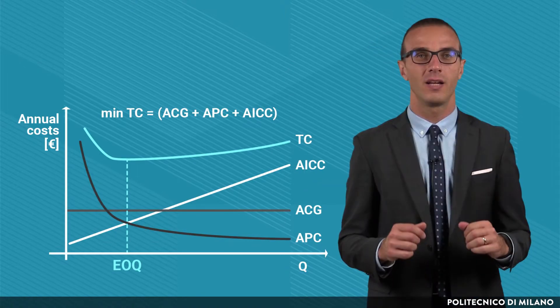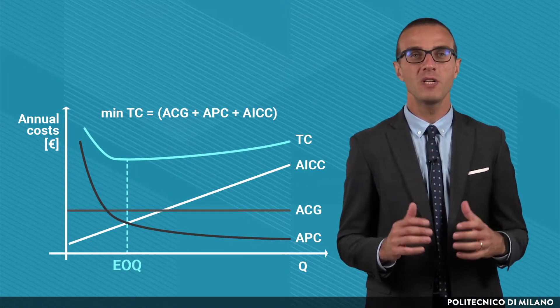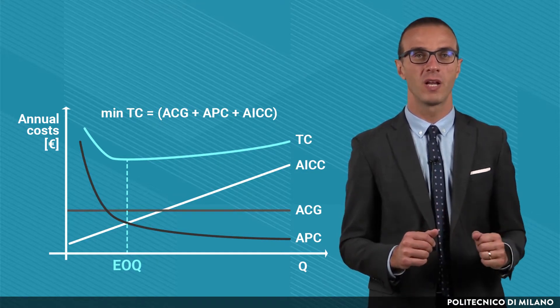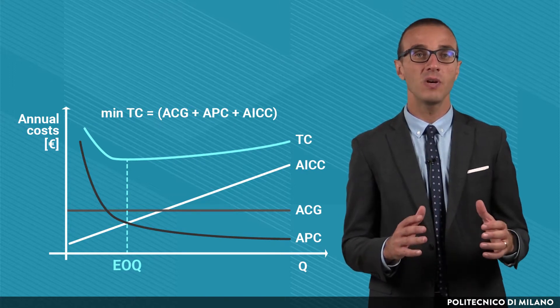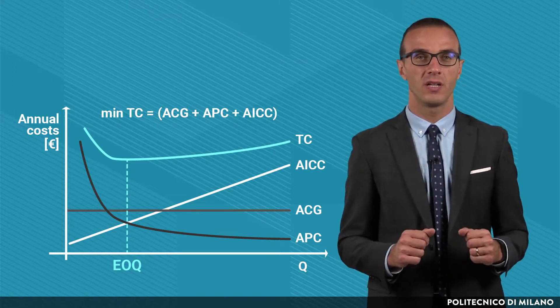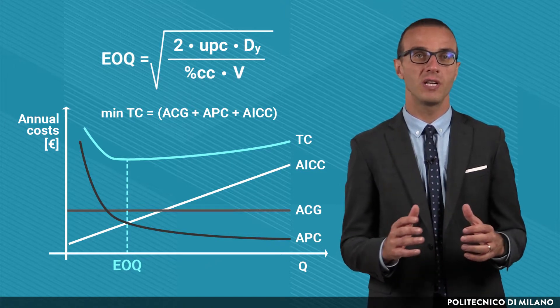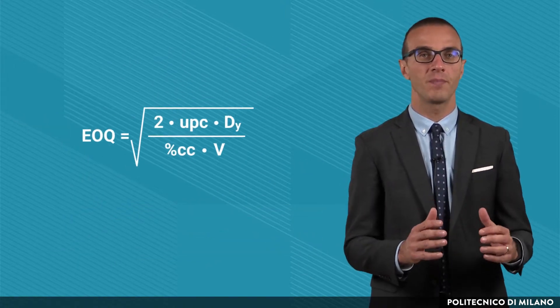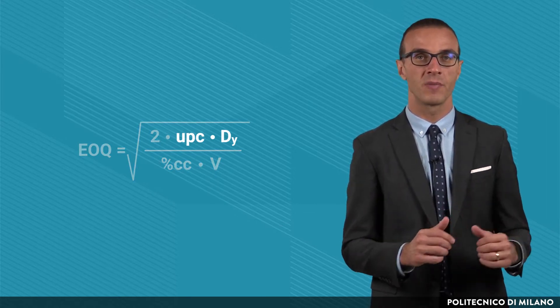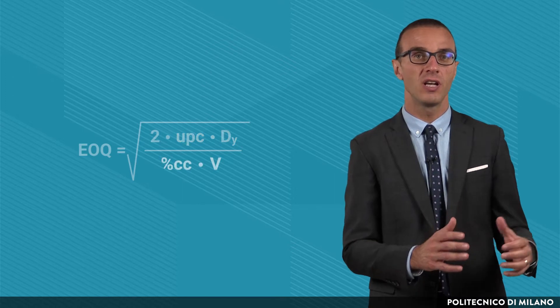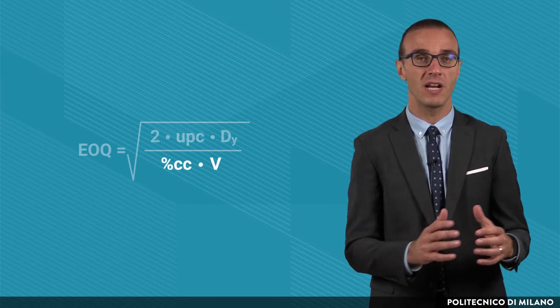Once the relevant costs have been modeled, the function of the total cost depending on Q can be computed by summing them up. Then, in order to find the EOQ, we have to minimize this total cost function. It is computed by mathematically differentiating the function on Q and equaling the result to zero. The resulting EOQ formula is the one shown in the picture. This formula has, at the numerator, a component proportional to the annual procurement cost, and at the denominator, a component proportional to the annual inventory carrying cost.